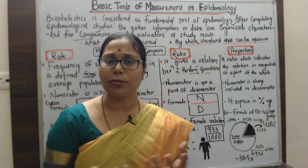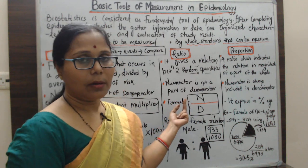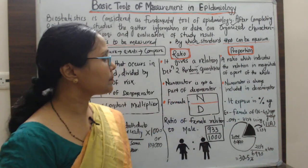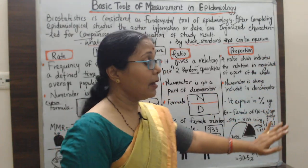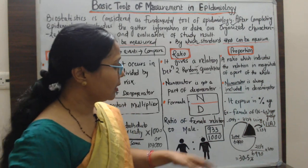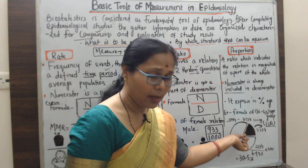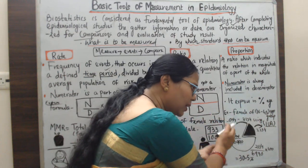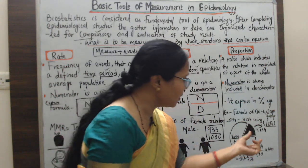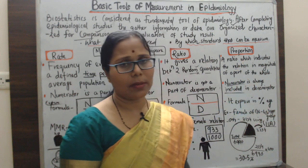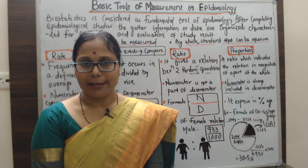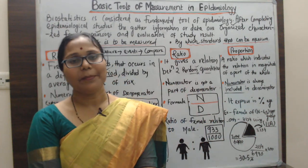Ratio is always a fractional number representing the relation between two random quantities, expressed as N divided by D, where N is not a part of the denominator. Proportion is expressed as a percentage, and the numerator is always included in the denominator — it is a part of the whole, like a spot area included within a total area. That is all about the basic tools of measurement. Thank you for watching and please subscribe to my channel.